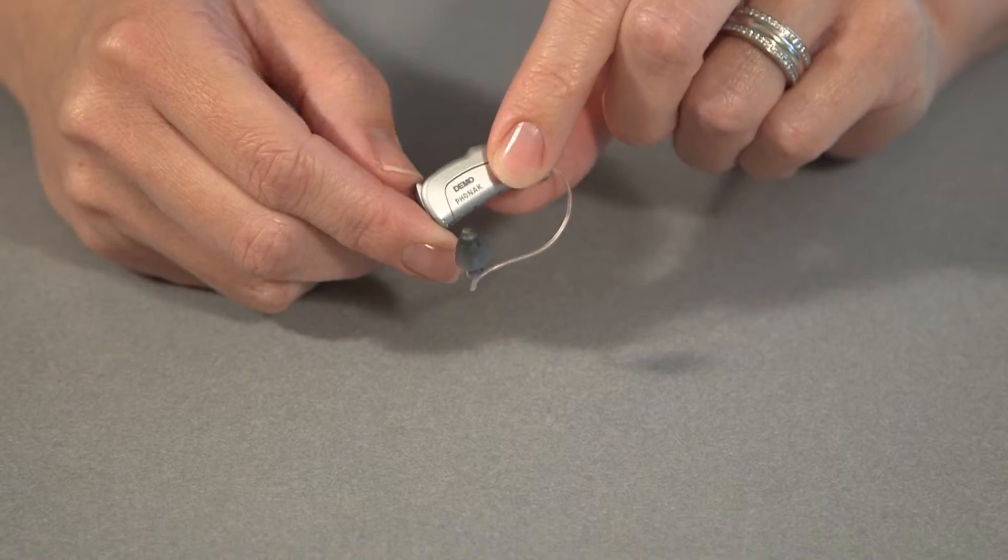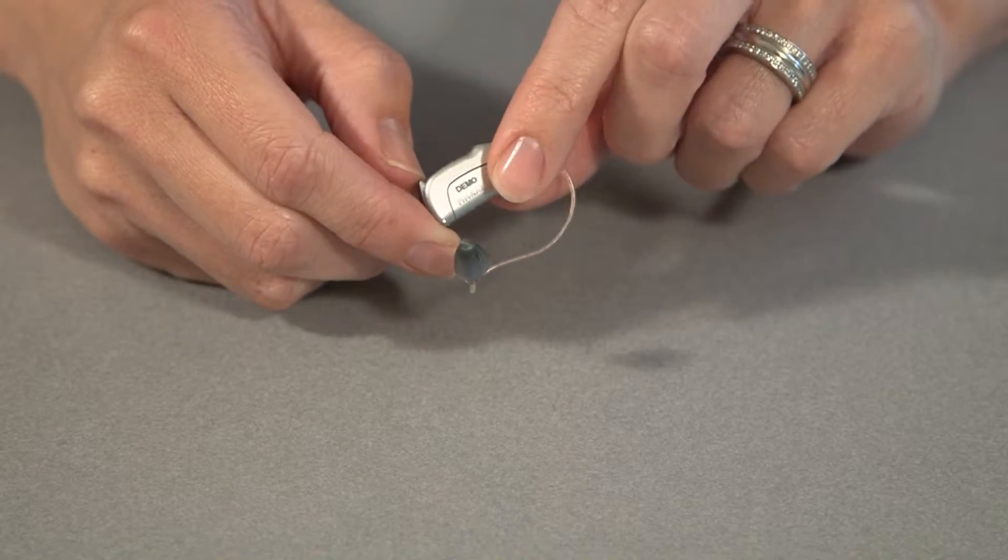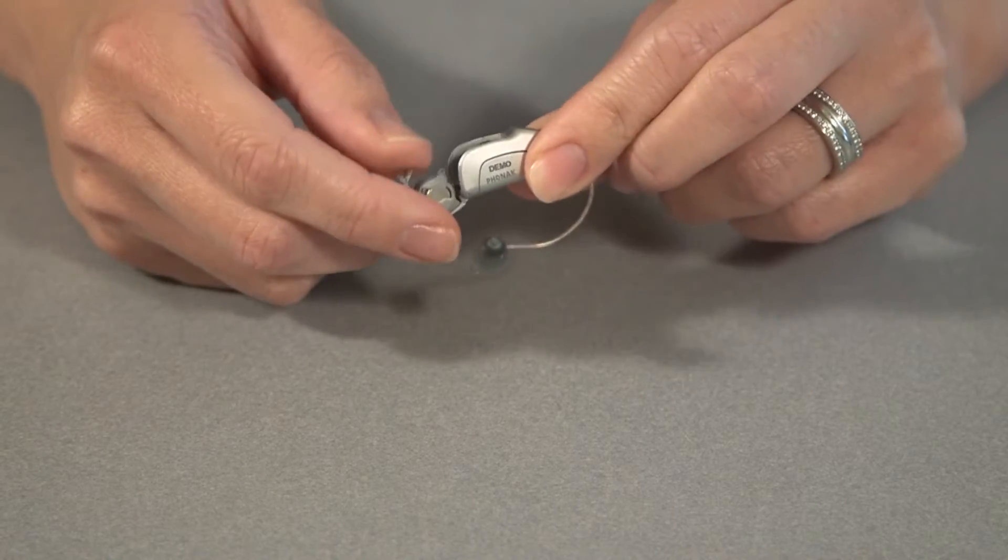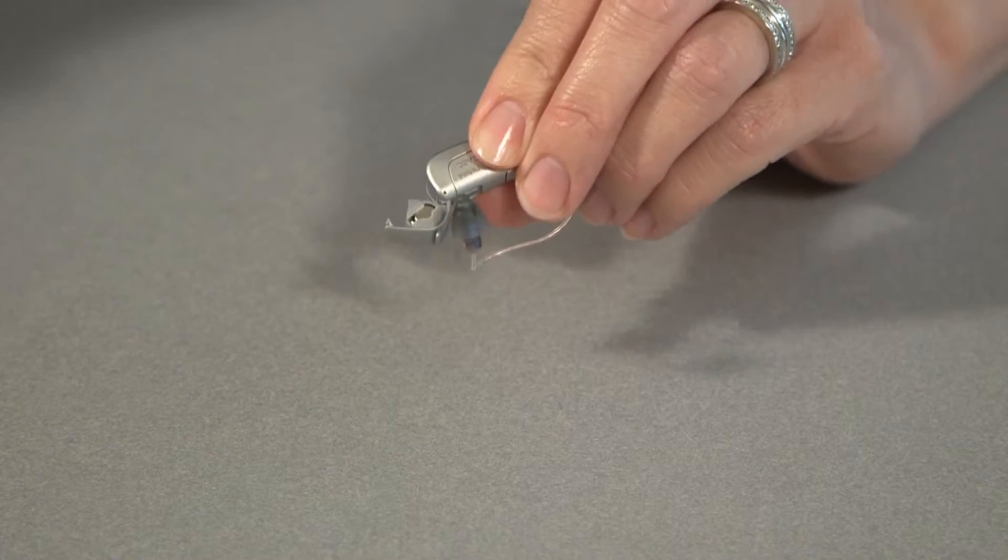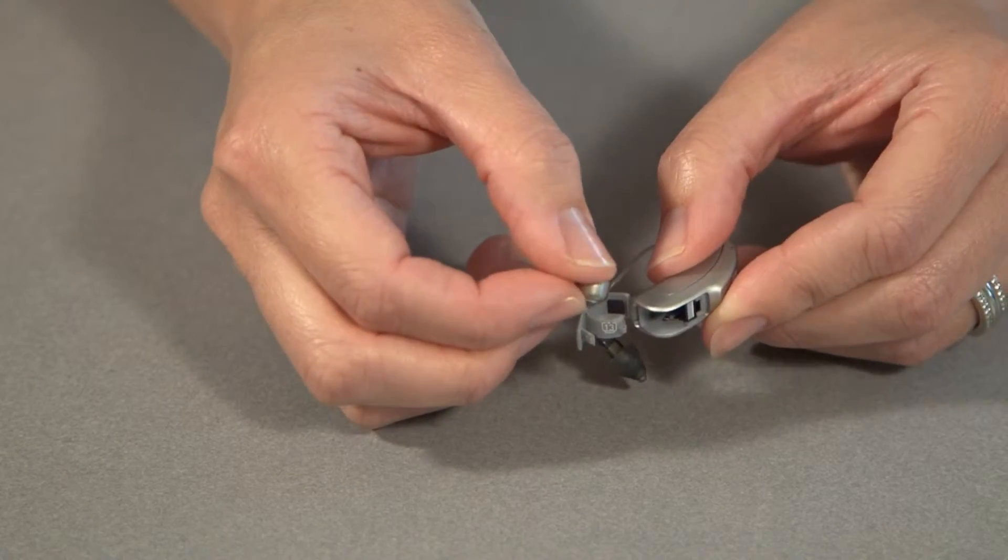And this is another receiver in the ear hearing aid. The first thing you want to do is replace the battery. So we'll take out the old battery and put in a new one.